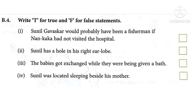Now coming to exercise B4, we have to write T for true and F for false statements. The first statement is: Sunil Gavaskar would probably have been a fisherman if Nan Kaka had not visited the hospital. Yes, the statement is true — if his uncle had not noticed the hole on his left ear lobe, the babies would have been exchanged. Number two: Sunil has a hole in his right ear lobe. This is false, because he had a hole in his left ear lobe.